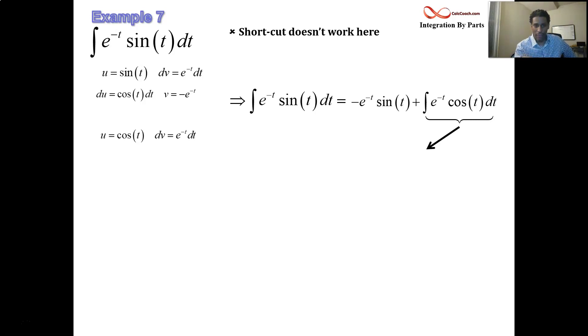What's the derivative of cosine? It's negative sine. What's the integral of e to the minus t? We did it above, negative e to the minus t. So that integral that we traded in for will now give us another integral. So we're going to have the product of u and v minus the integral, which is the product of v and du.